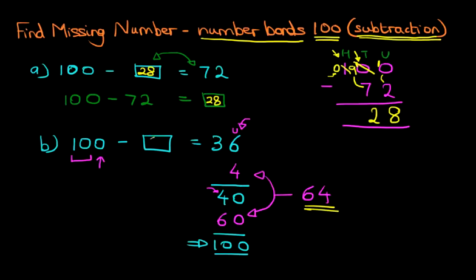And we can write this in the question. 100 minus 64 equals 36. The missing number is 64.